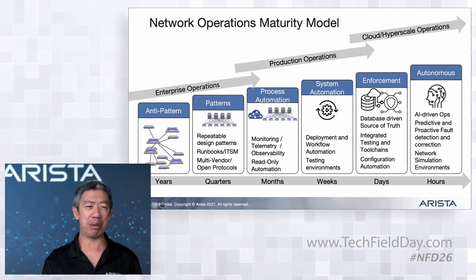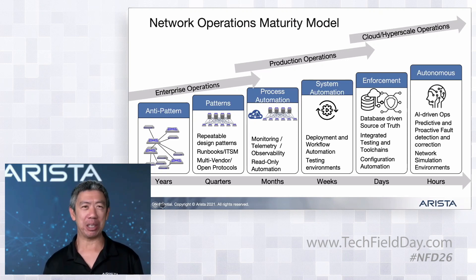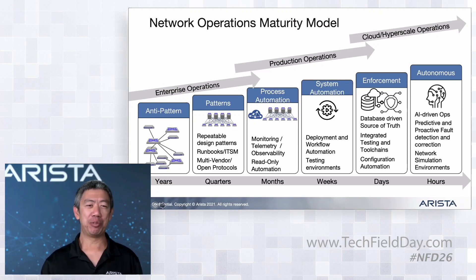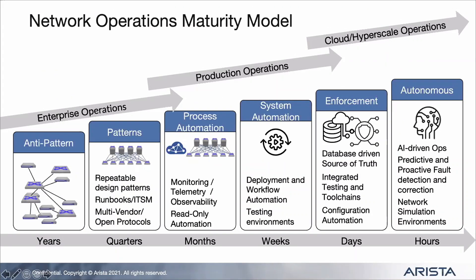Common patterns we see are people moving from snowflake designs and anti-patterns to repeatable cookie-cutter network deployments. It's really hard to automate things until you get them well-defined and repeatable. As you move further right, you start introducing read-only automation, telemetry, and monitoring — this is where tools like Cloud Vision make a big impact, providing real-time telemetry on current network status. This is also where we get network operators comfortable with DevOps tooling and infrastructure-as-code concepts.